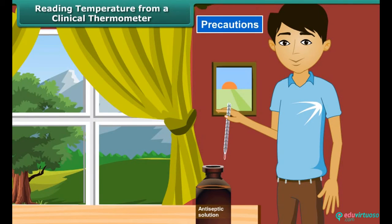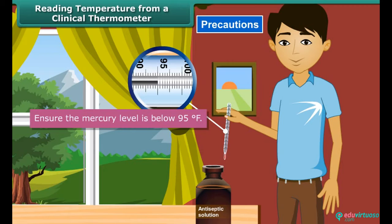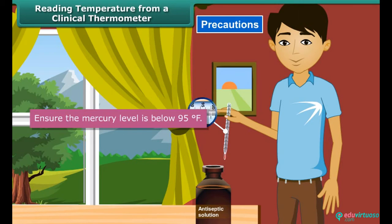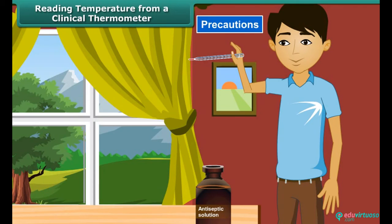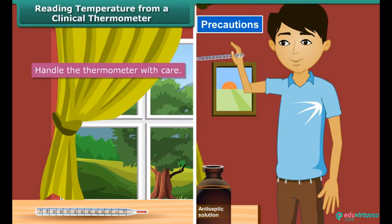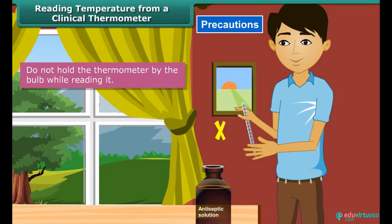Precautions to be observed while reading a clinical thermometer: the thermometer should be washed before and after use, preferably with an antiseptic solution. Ensure the mercury level is below 95°F. Read the thermometer keeping the level of mercury along the line of sight. Handle the thermometer with care — if it hits against a hard object, it can break. Do not hold the thermometer by the bulb while reading it.